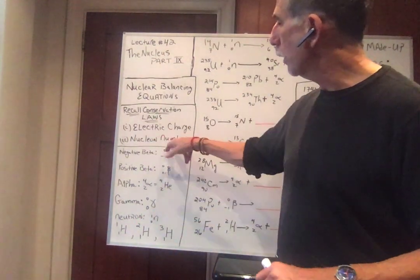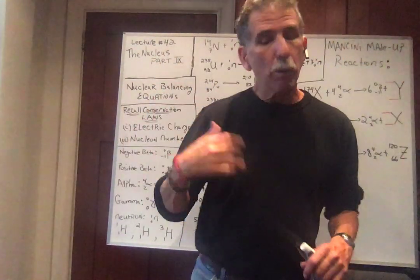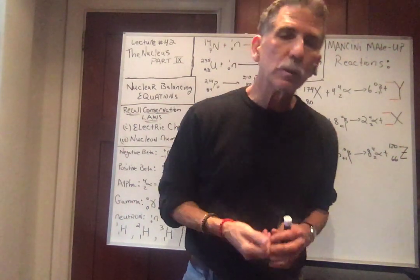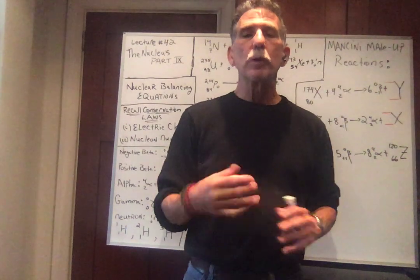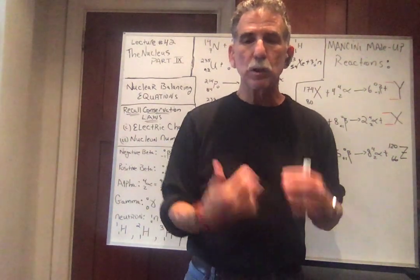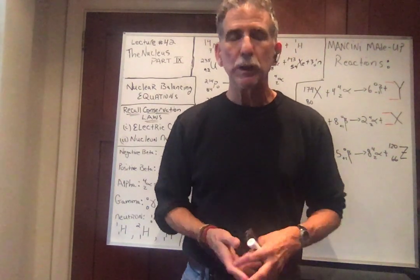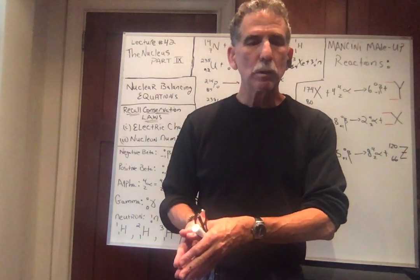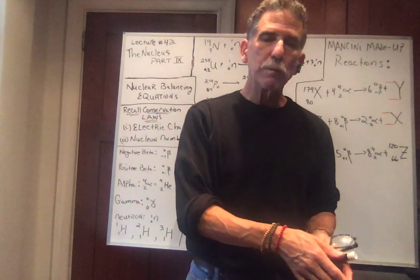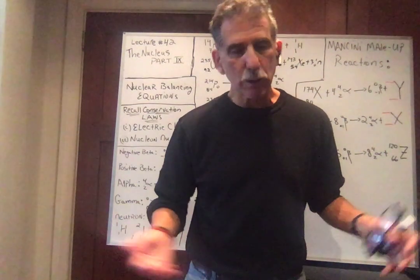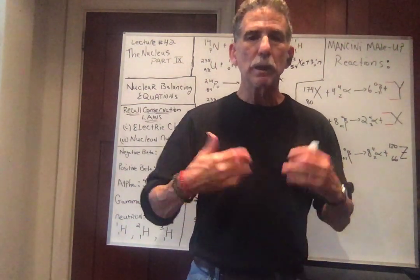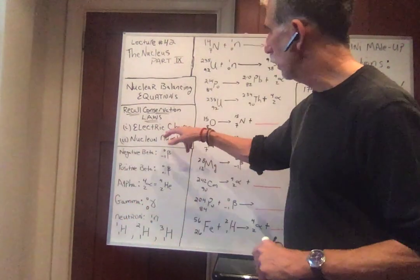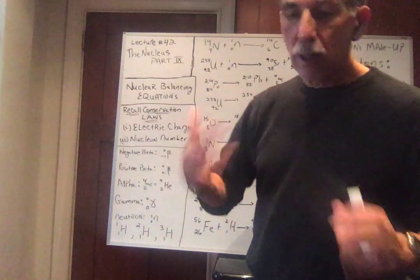Conservation of nucleon number, same idea. What you start with is equal to what you finish with. Remember, there's two types of nucleons: protons and neutrons. So if we start with 30 nucleons, we must finish with 30 nucleons. If we have 20 protons and 10 neutrons, then we can finish with 25 protons and 5 neutrons, as long as there's 30 nucleons, and as long as we don't violate the law of conservation of electric charge.